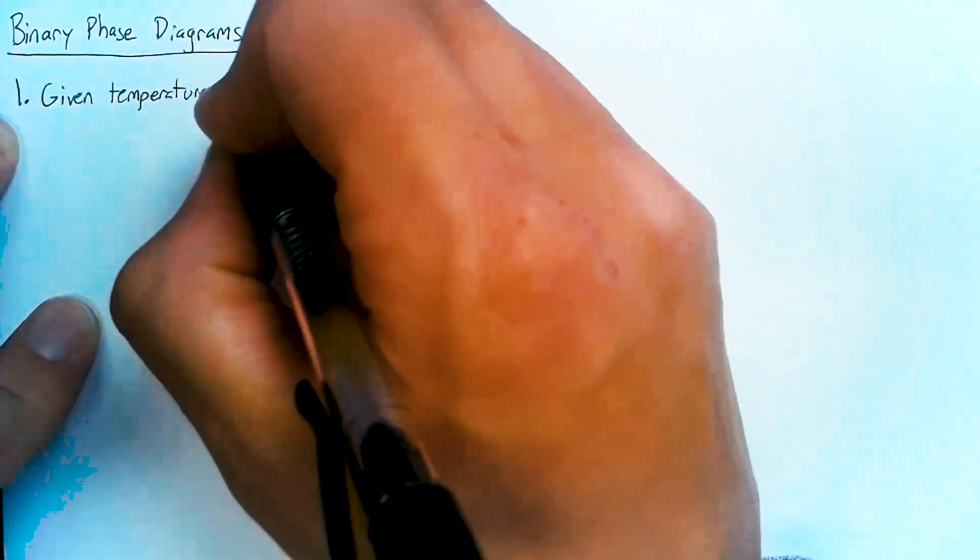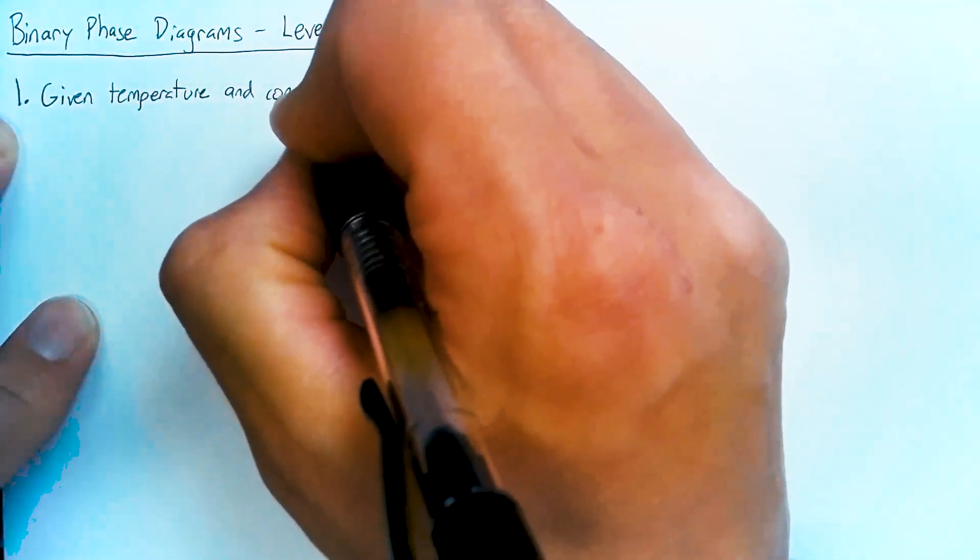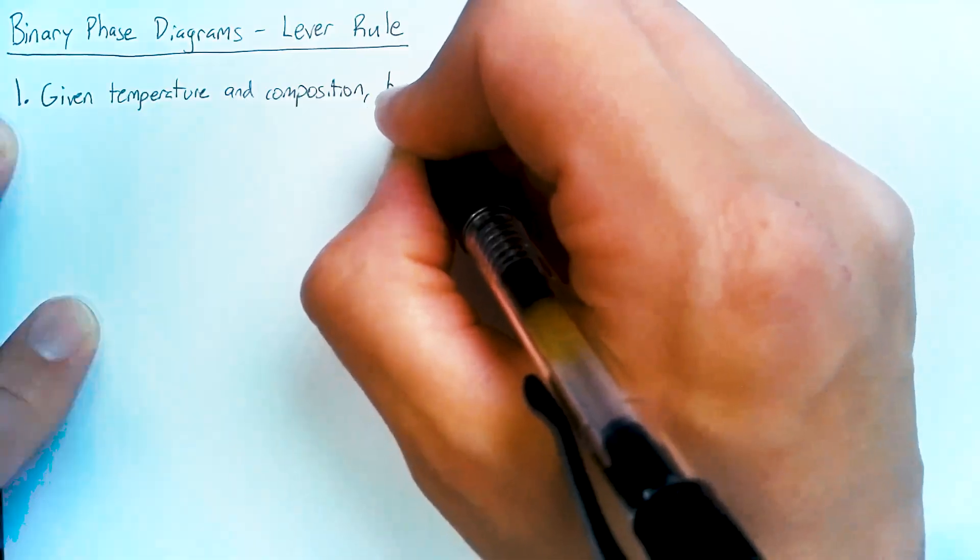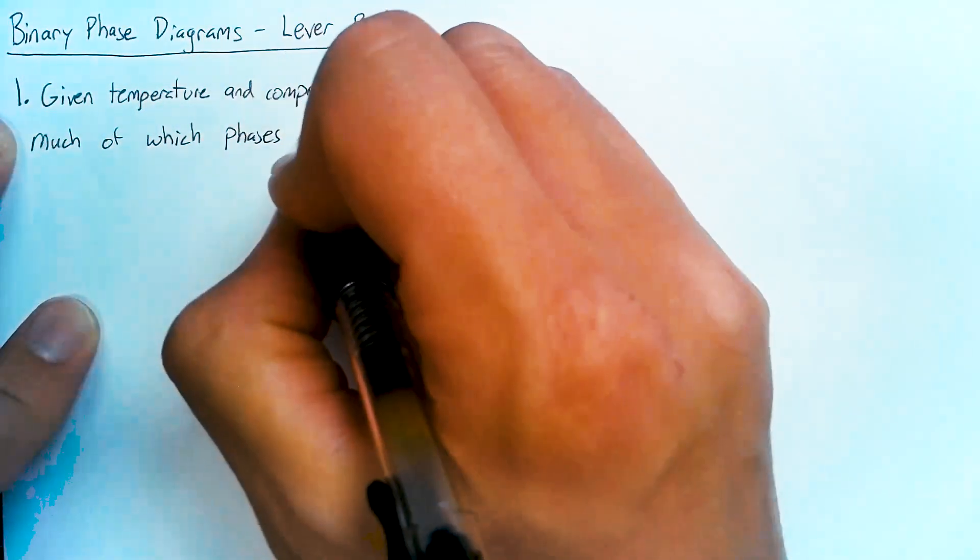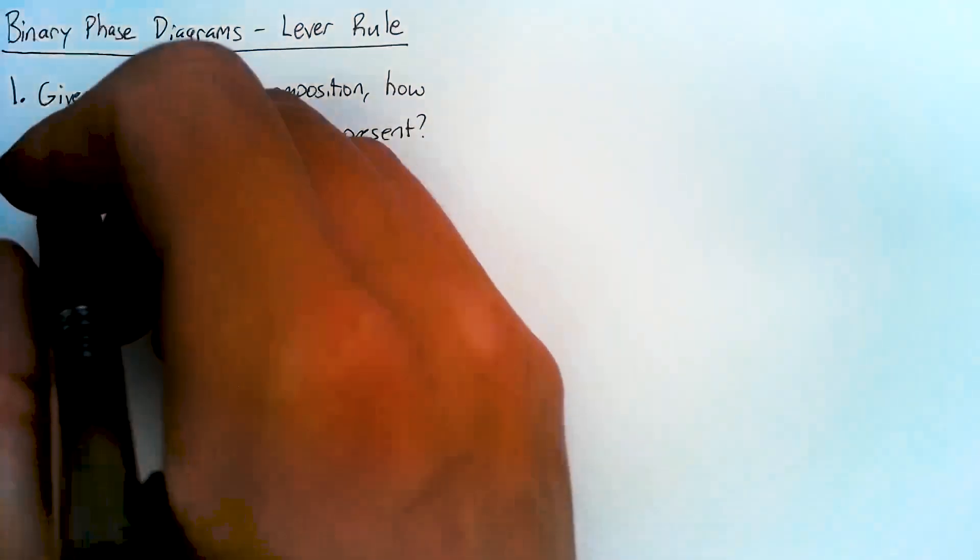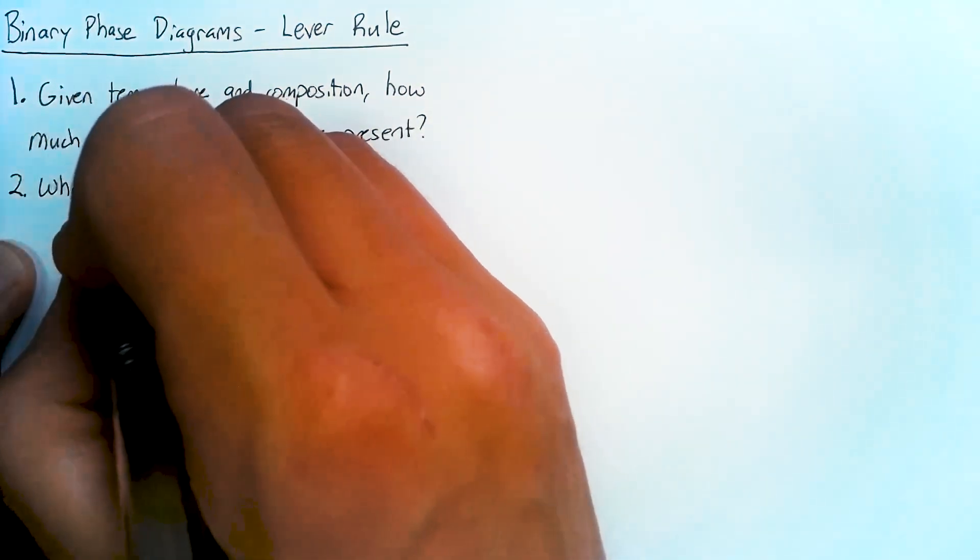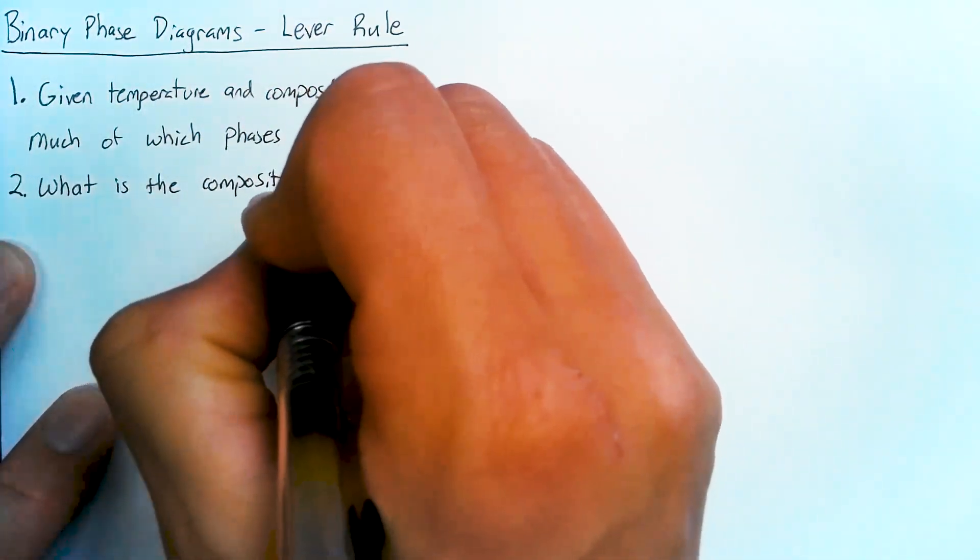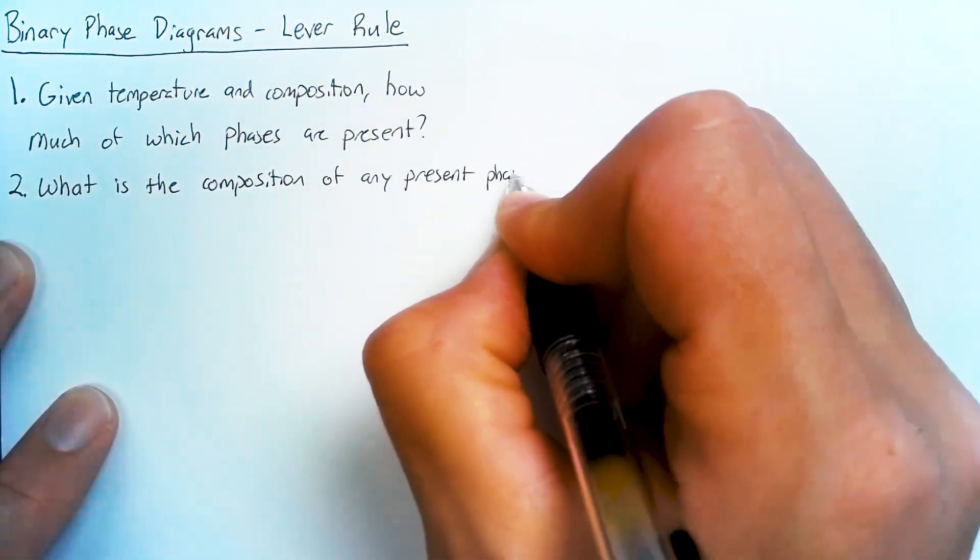So first off a phase diagram is intended to answer two questions. The first of which is given the temperature and composition of our material, how much of what phases are present? The second question they answer is what is the composition of any present phases?